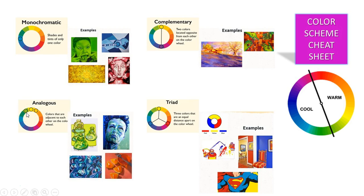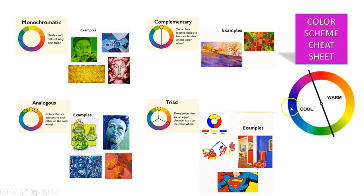A monochromatic color scheme has only one color — 'mono' means one and 'chroma' means color — plus that color's tints and shades, or lights and darks. Analogous colors are those next to or adjacent to each other on the color wheel — side by side. It doesn't have to be green, yellow, and orange; it can be blue-green, blue, and blue-purple, or any three to five colors that are side by side on the color wheel. Blue and orange are opposite each other on the color wheel, so we know it can't be analogous or monochromatic.